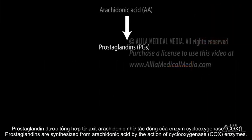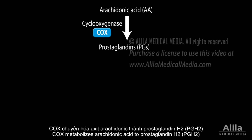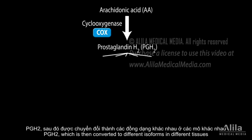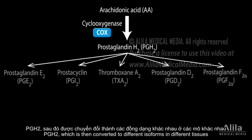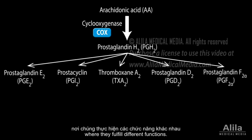Prostaglandins are synthesized from arachidonic acid by the action of cyclooxygenase, COX enzymes. COX metabolizes arachidonic acid to prostaglandin H2 (PGH2), which is then converted to different isoforms in different tissues, where they fulfill different functions.